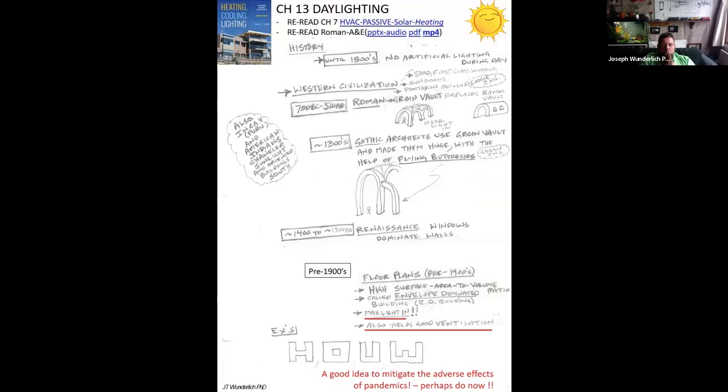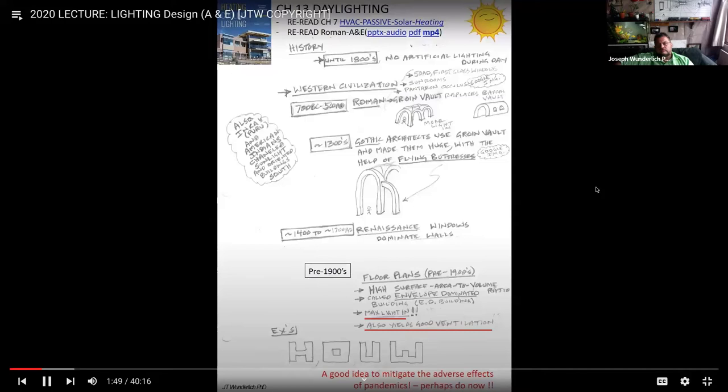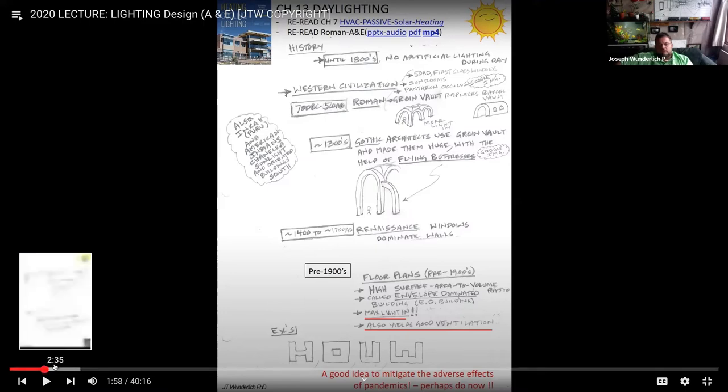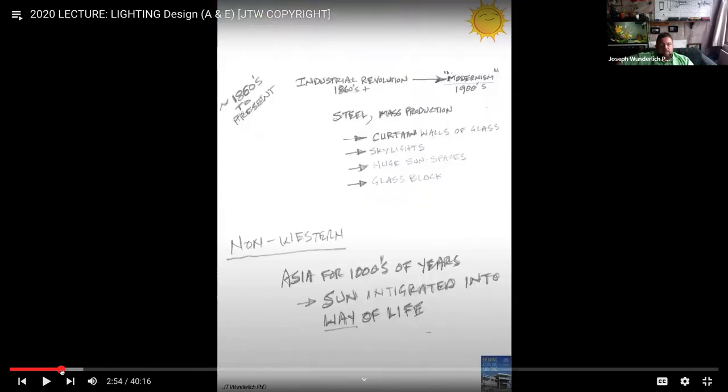The main reference sources here will be this textbook that we're using on heating, cooling and lighting, and also the Illumination Engineering Society handbook. Firstly, we always want to make maximum use of the sun, natural lighting, passive. You always want to do passive things first before active. We want to speak of daylighting first. Students, just take a quick look at chapter 7, the HVAC passive solar heating, and also the Roman architectural engineering.